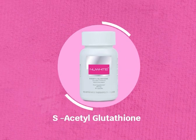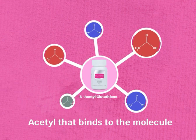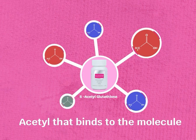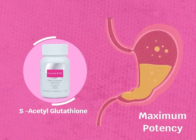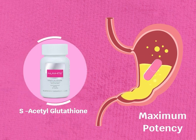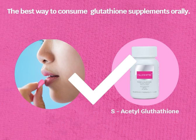This brings us to S-acetyl glutathione. S-acetyl glutathione is simply a glutathione with an acetyl group that binds to the molecule. This binding protects the molecule from degradation within the digestive tract and therefore ensures maximum potency. It's the best way to consume glutathione supplements orally, and it doesn't need extra protection.